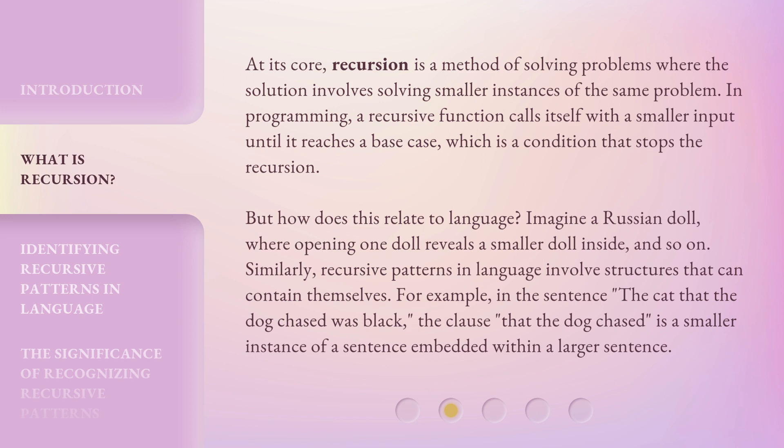Imagine a Russian doll, where opening one doll reveals a smaller doll inside, and so on. Similarly, recursive patterns in language involve structures that can contain themselves. For example, in the sentence 'the cat that the dog chased was black,' the clause 'that the dog chased' is a smaller instance of a sentence embedded within a larger sentence.